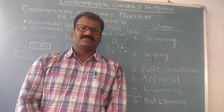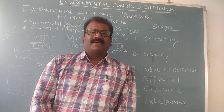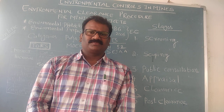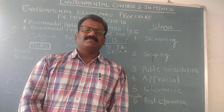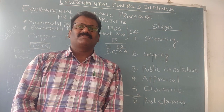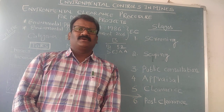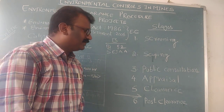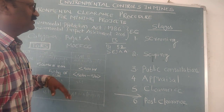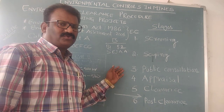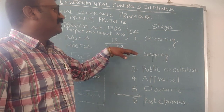The central government requires environmental clearance based on the Environmental Impact Assessment (EIA) Notification 2006. Every project, prior to commencing operations, is required to obtain a clearance certificate from these two agencies. There are four to six stages for getting the environmental clearance certificate: screening, scoping, public consultations, appraisal, clearance, and post-clearance.